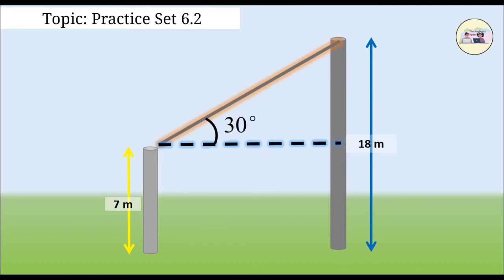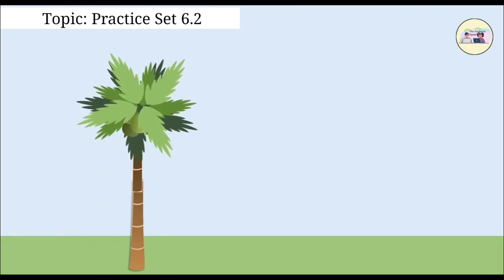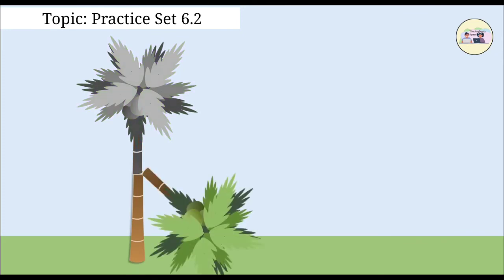Question 5. A storm broke a tree and the treetop rested 20 meters from the base of the tree, making an angle of 60 degrees with the horizontal. Find the height of the tree.